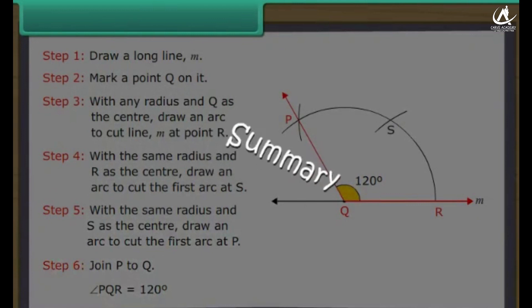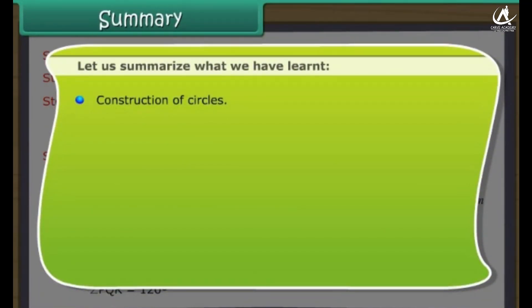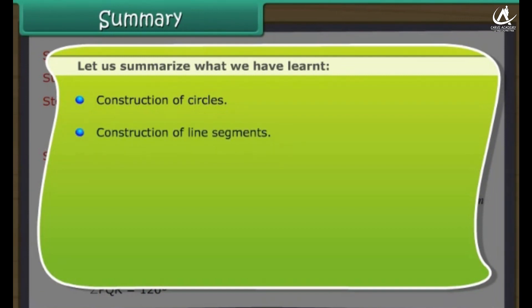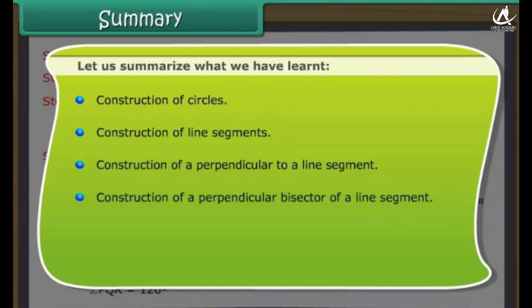Summary. Let us summarize what we have learned: construction of circles, construction of line segments, construction of a perpendicular to a line segment, construction of a perpendicular bisector of a line segment, construction of an angle bisector, and construction of angles.